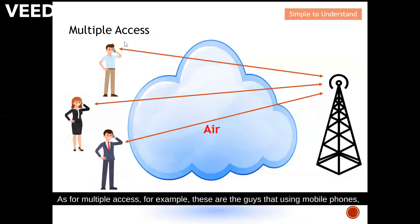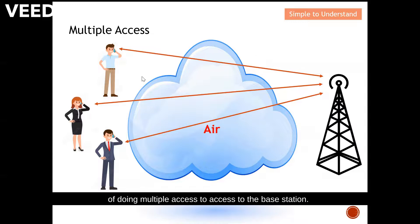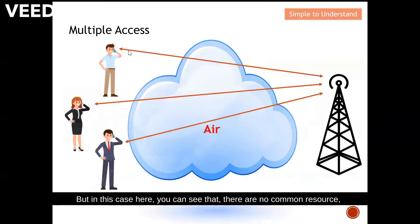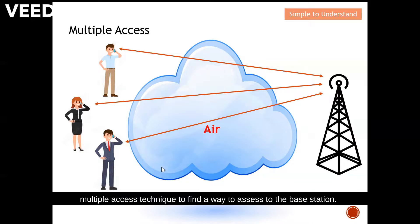As for multiple access, consider people using mobile phones — be it 2G, 3G, 4G, or the latest 5G. They don't actually squeeze through any shared resource. As you can see, they have their means of doing multiple access to reach the base station. Unlike multiplexing where all four users squeeze into one common resource with a bottleneck at the optical fiber, in multiple access there is no single common resource bottleneck. Instead, they use a unique multiple access technique to find a way to access the base station, accommodating multiple users.